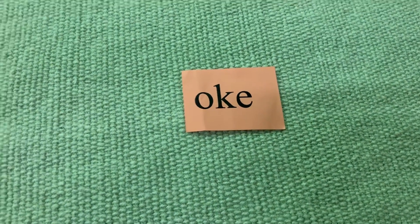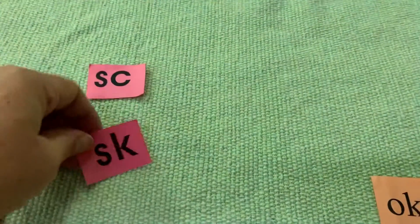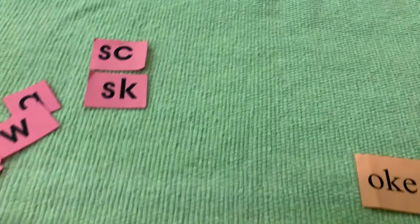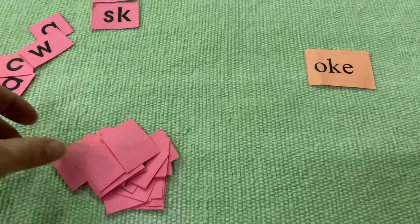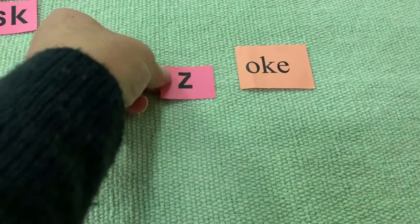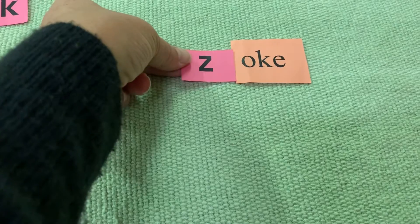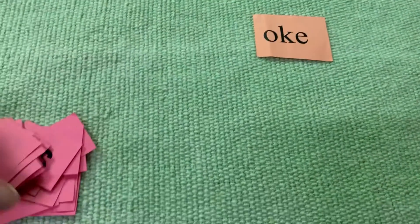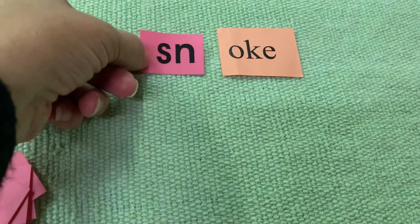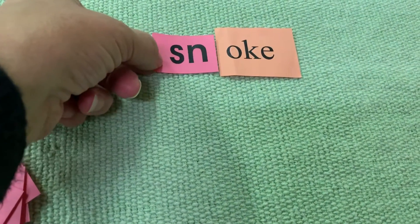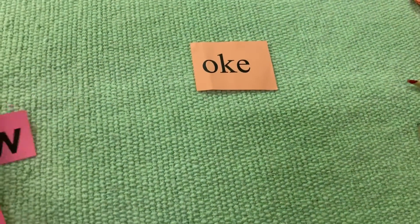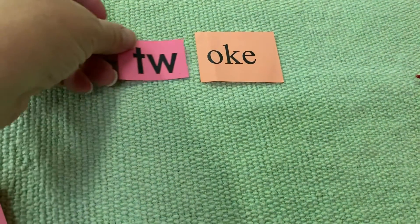And make sure you notice — oh my goodness — these both sounded the same but they used different letters, didn't they? 'Zoke.' 'Snoke.' 'Twoke.'